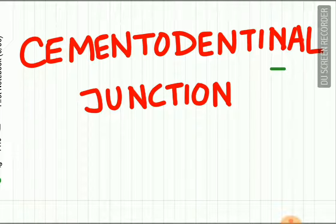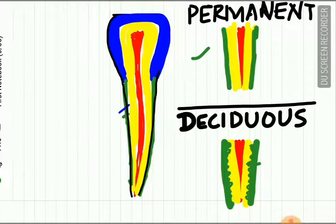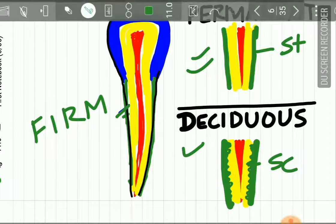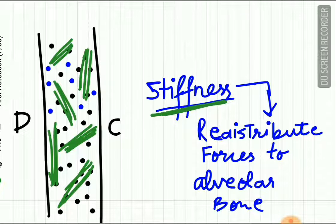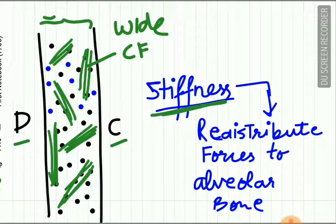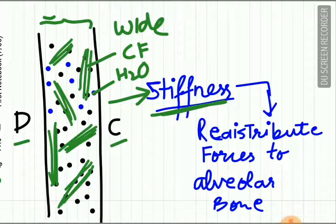The cemento-dentinal junction is the junction between the cementum and the dentine. In permanent teeth this junction is straight, while in deciduous teeth it is scalloped. But in both types of teeth this junction is very firm. Under the electron microscope it appears as a wide band consisting of ground substance shown by black dots, collagen fibers shown by green bundles, and water molecules shown by blue dots. This configuration gives stiffness and helps in redistribution of forces to the alveolar bone.